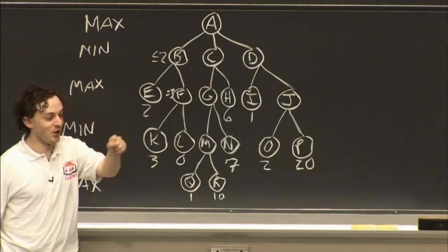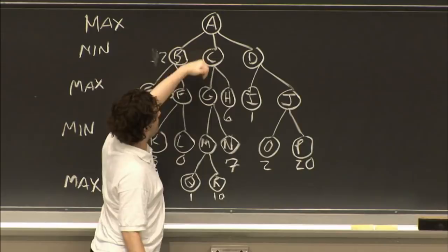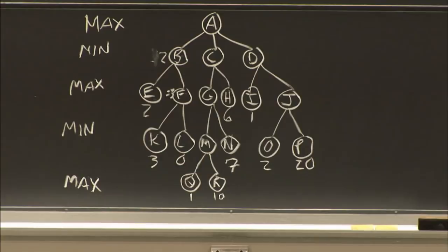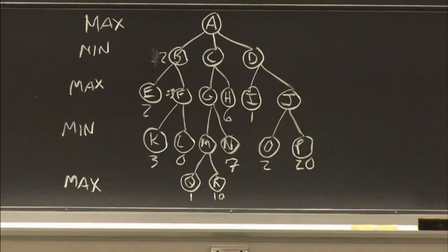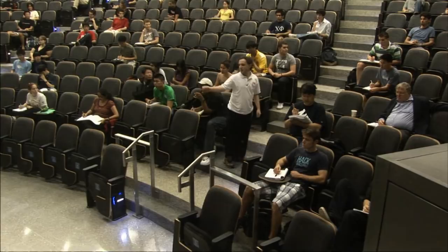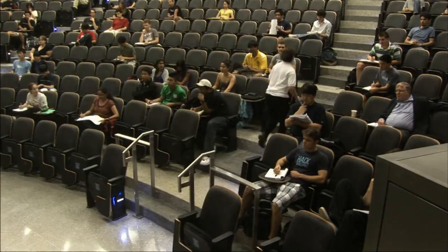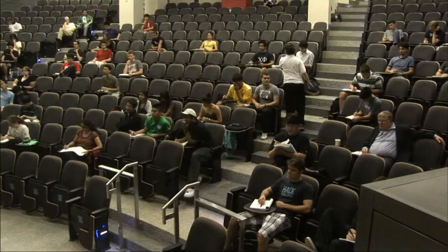So if this is 3 and E is 2, then the value of B is 2 — the minimum. Now let's go down into the C branch. C is going to be the minimum of G and H. We need the maximum of M and N. M is the minimum of Q and R. The minimum of Q and R is 1, so M has a value of 1. Knowing that, G has a value of 7 — 7 is higher than 1. Since G is 7, C has a value of 6, which is the minimum of 6 and 7.